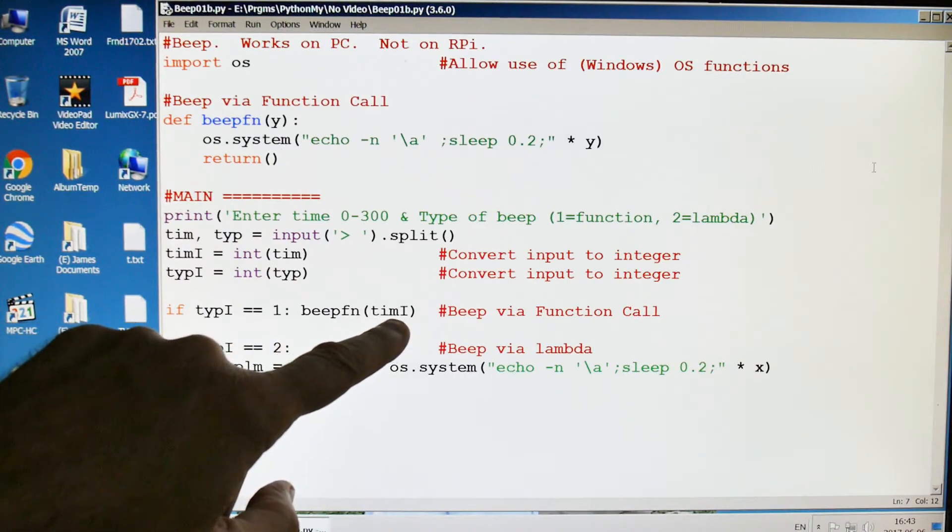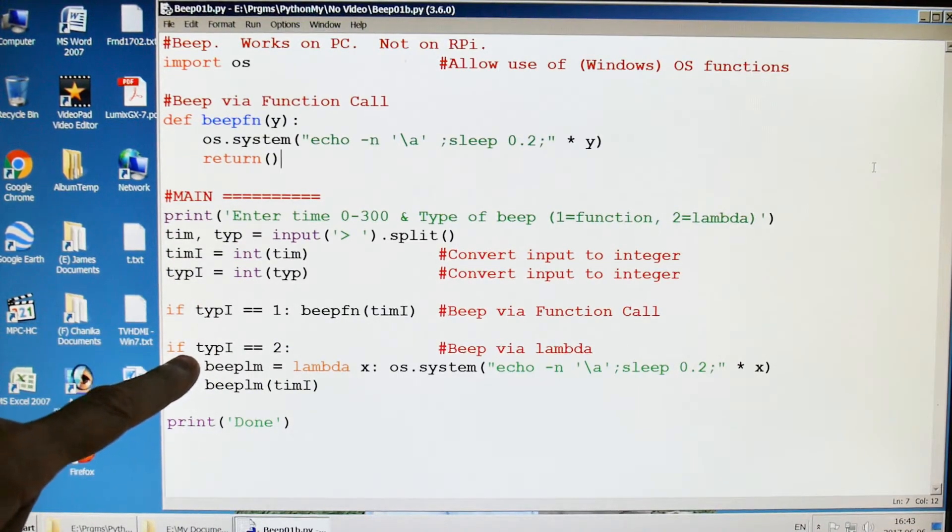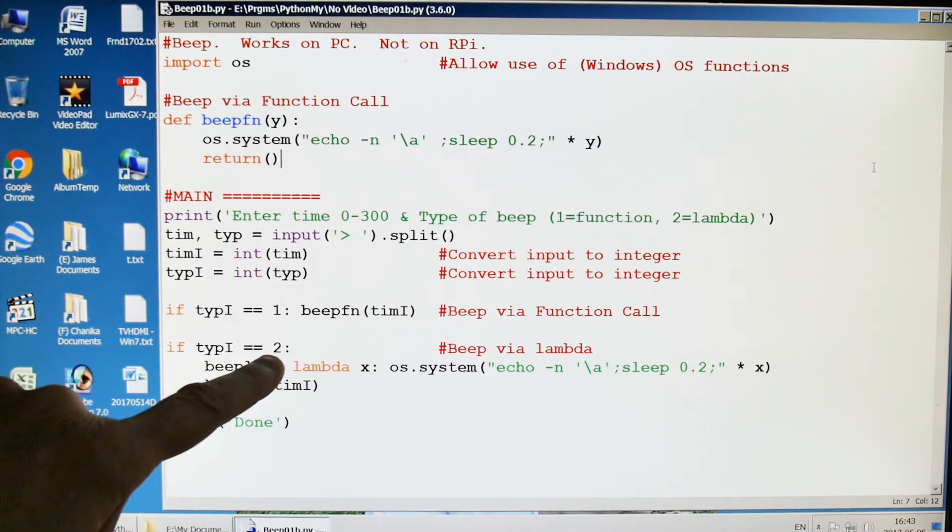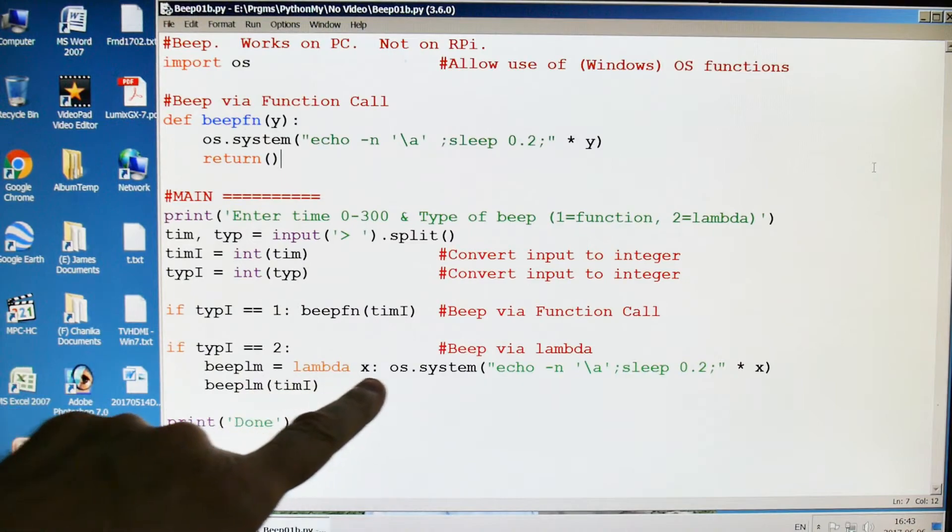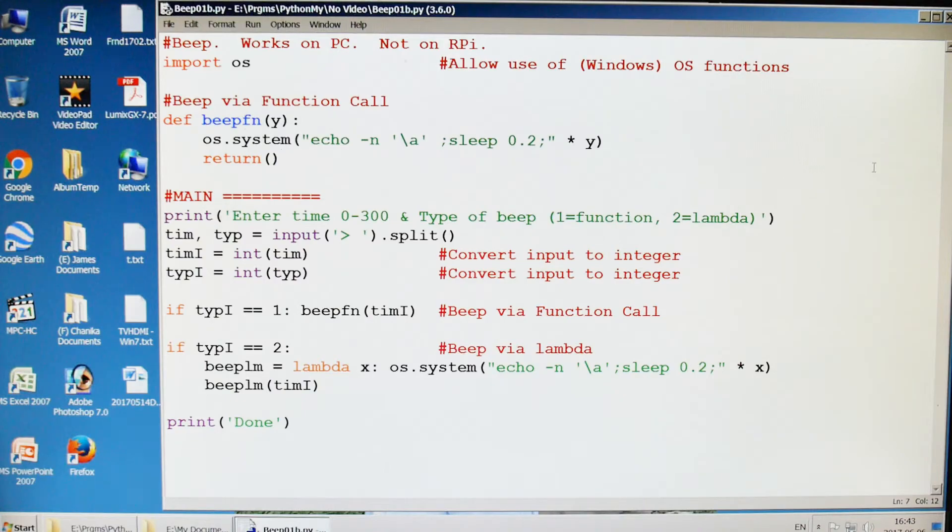If the user wanted a function, we're going to call the function by this amount of time from up here. And if it is the lambda they wanted, we're going to use the lambda beep. And then we'll print done, and that's it.